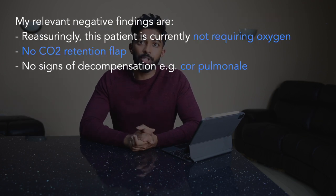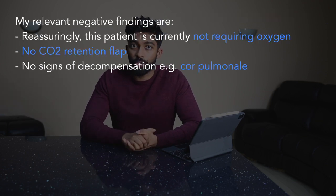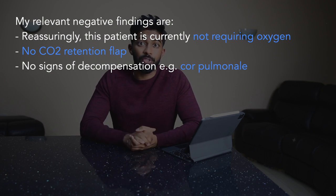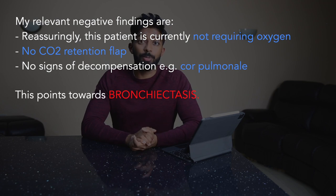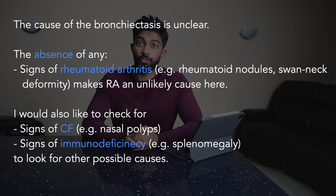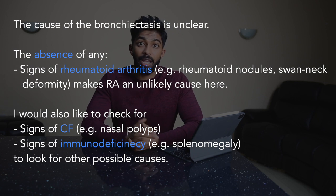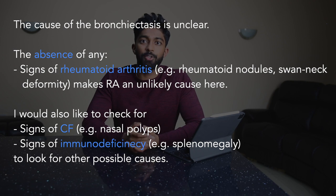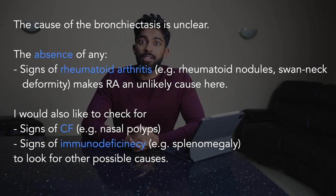My relevant negative findings are: reassuringly this patient is not requiring oxygen, there's no CO2 retention flap, and there's no signs of decompensation such as cor pulmonale. So this points towards bronchiectasis. The cause of the bronchiectasis is unclear. The absence of any signs of rheumatoid arthritis such as rheumatoid nodules or a swan neck deformity make rheumatoid an unlikely cause. I'd also like to look for signs of cystic fibrosis such as nasal polyps and signs of immunodeficiency such as splenomegaly, to help look for other possible causes of bronchiectasis.